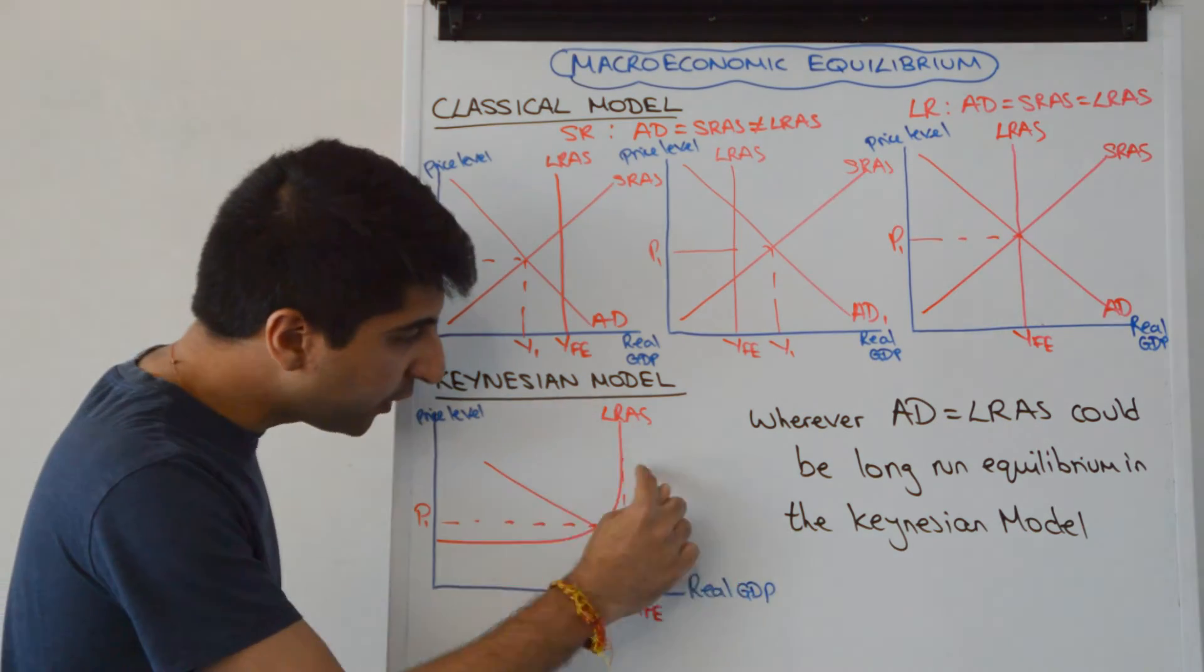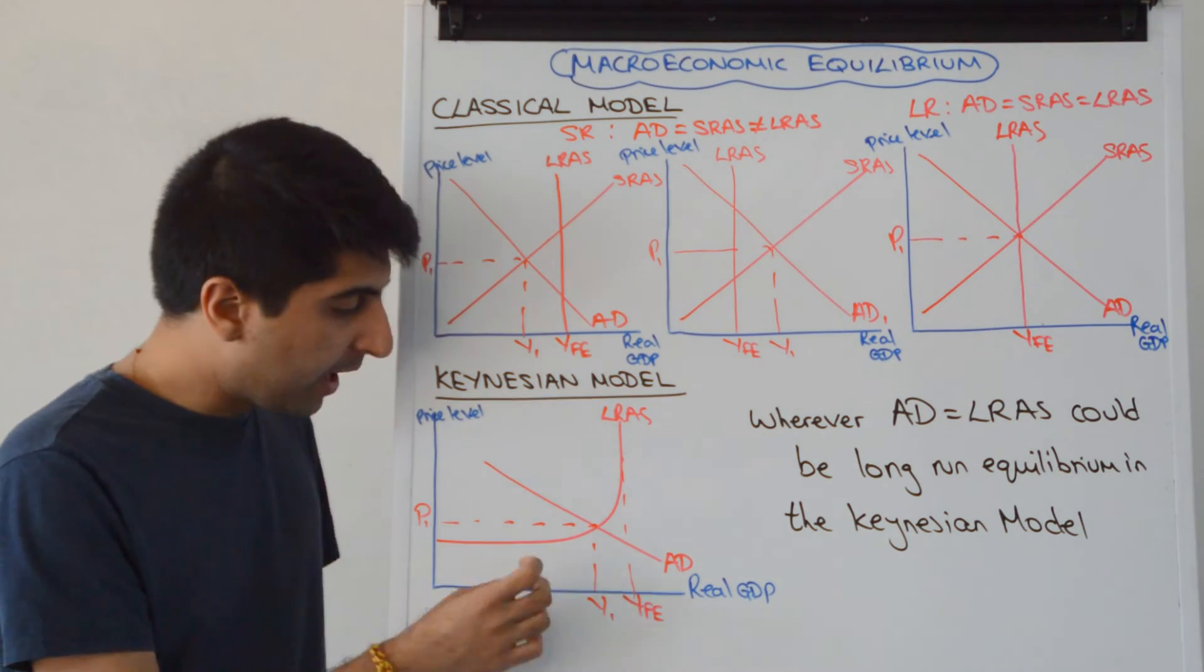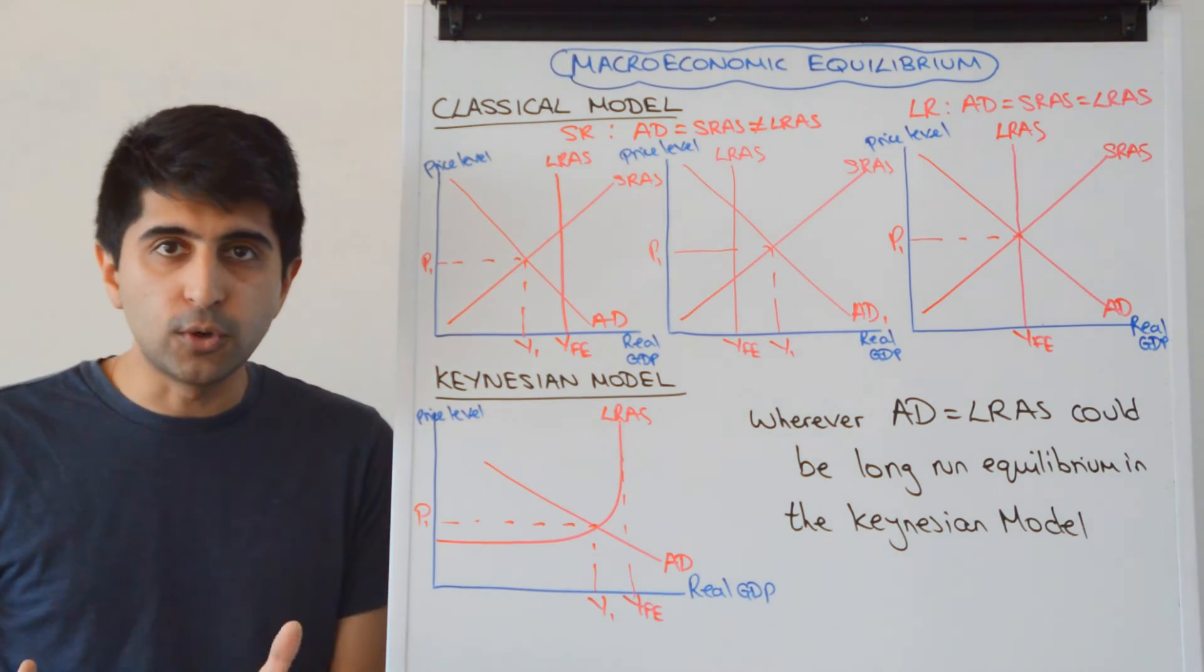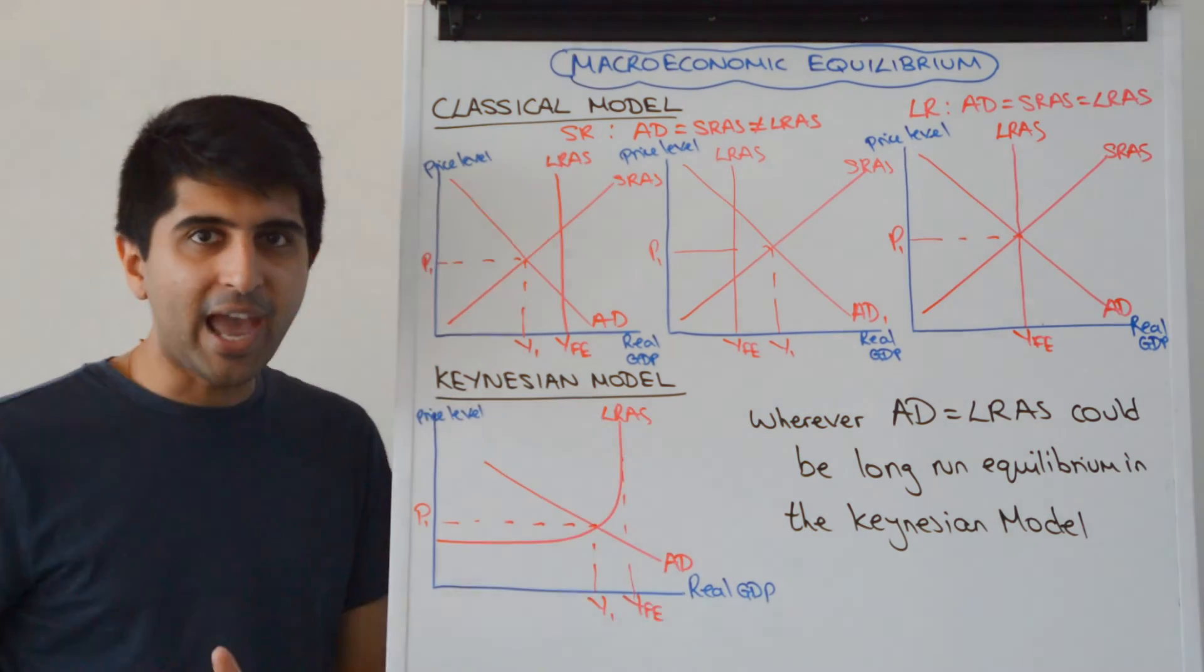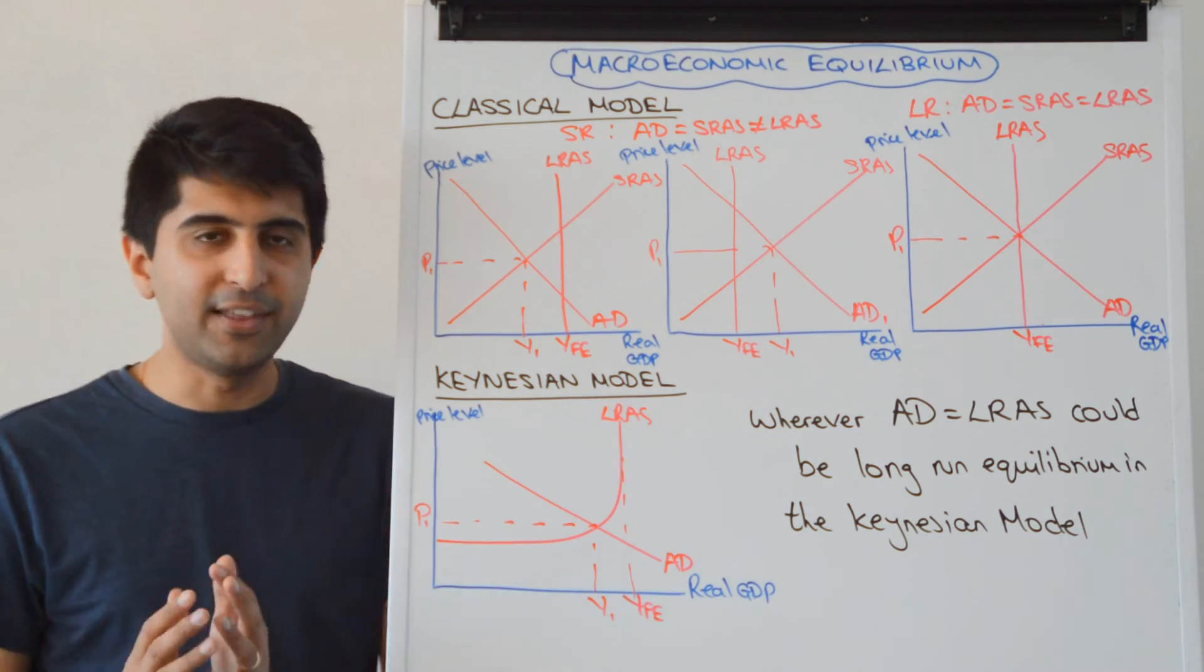If I drew AD on the vertical part of LRAS, that could be long-run equilibrium when we are at YFE. But if I drew AD here on the horizontal part, that could be a long-run equilibrium too. So for Keynesian economists, wherever AD is on the LRAS curve, that is macroeconomic equilibrium and that can persist in the long run. Very easy showing it there, different interpretations in the classical model.